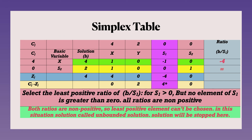Checking the s1 key column: the values in that column are −1 and 0 — meaning there is no positive value. Since no value is positive (all negative or zero), all replacement ratios become negative or undefined (infinity). Our rule requires only positive values for the ratio. Since no positive ratio exists — all become negative or undefined — this means our solution is unbounded. We stop the question here itself.